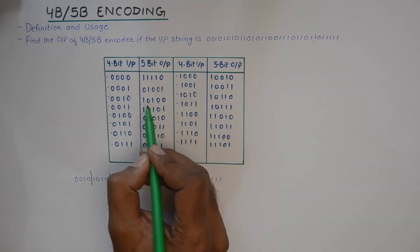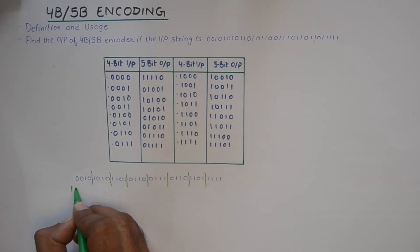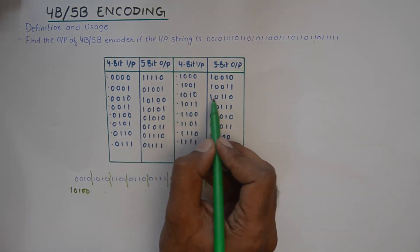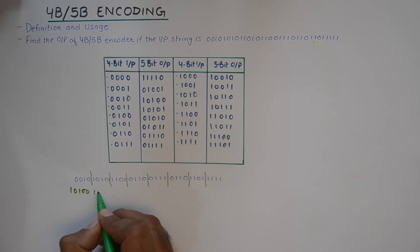a 0010 will result in a 10100 at the output. 1010 will result in 10110.